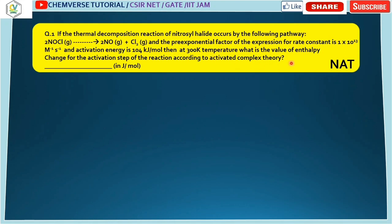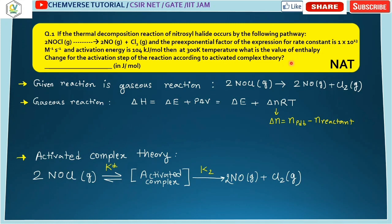From the problem statement, we note that the given reaction is a gaseous reaction — reactants and products are all gaseous. For a gaseous reaction, ΔH = ΔE + PΔV thermodynamically, and PΔV can be written as Δn·RT assuming ideal gas behavior. Here Δn is the number of moles of products minus number of moles of reactants.